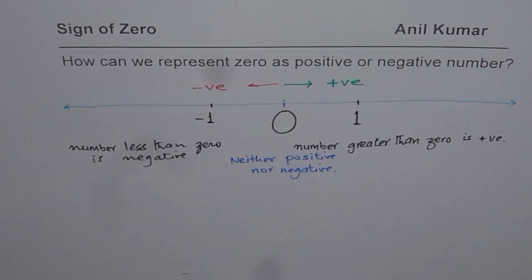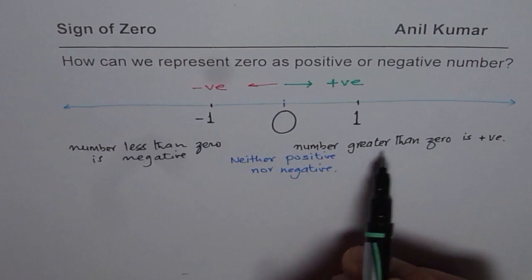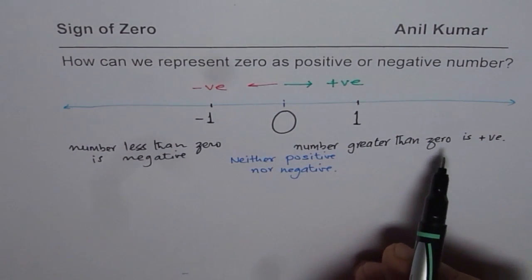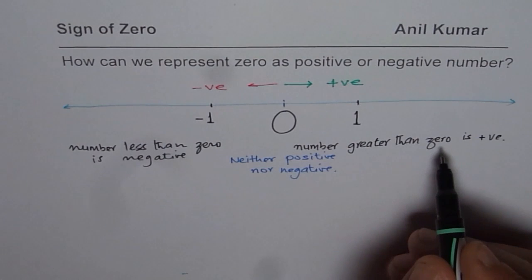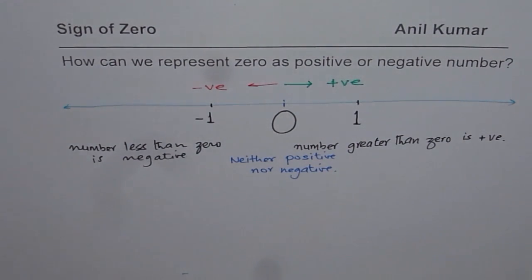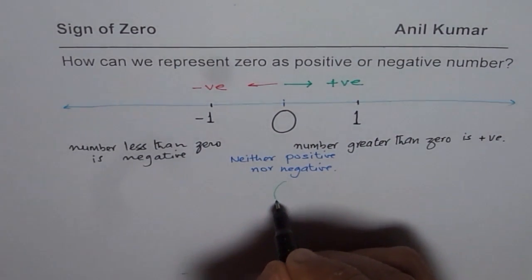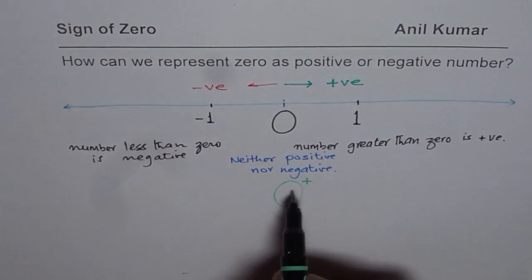Let's look into the definition of positive and negative once again. We say any number greater than zero — but how much greater than zero? That is what we have to look into. It could be 0.1, 0.01, 0.001, or anything at all.